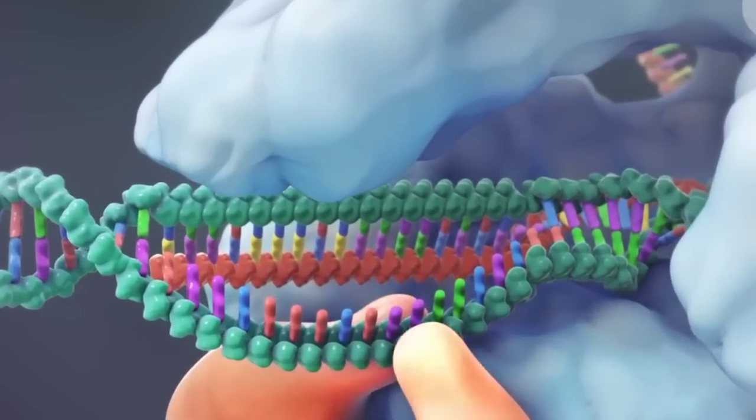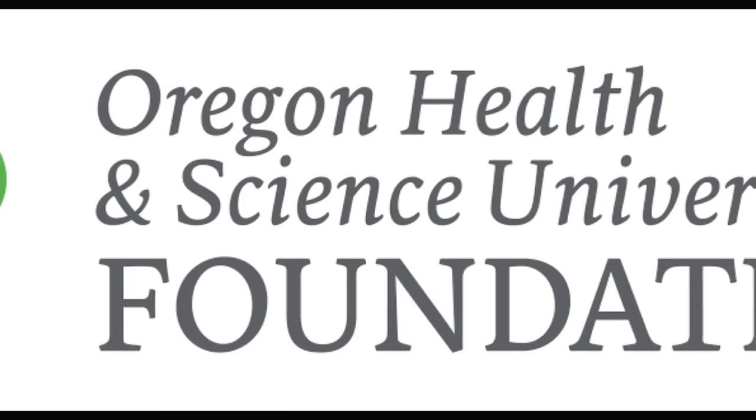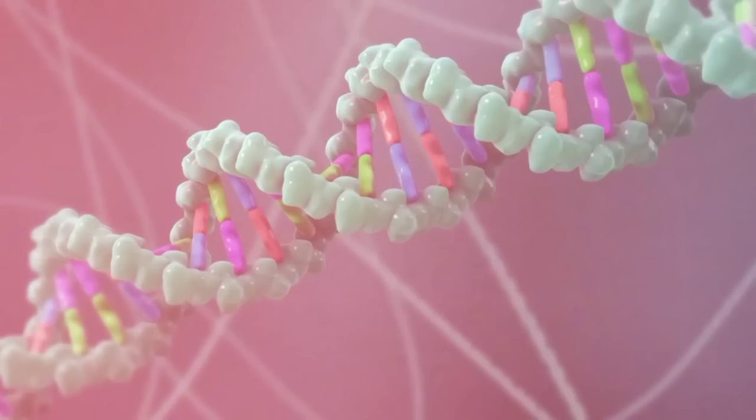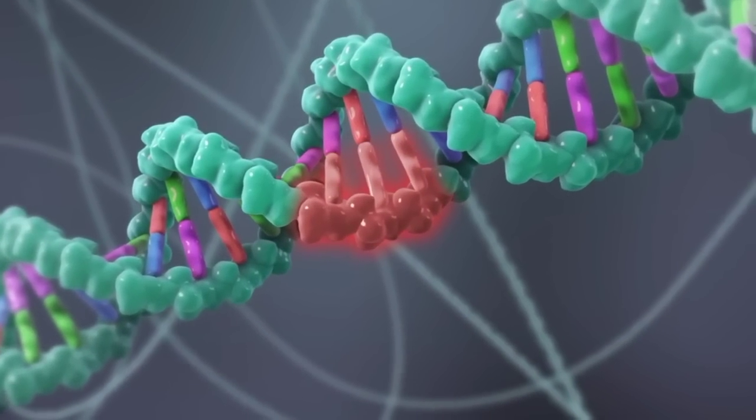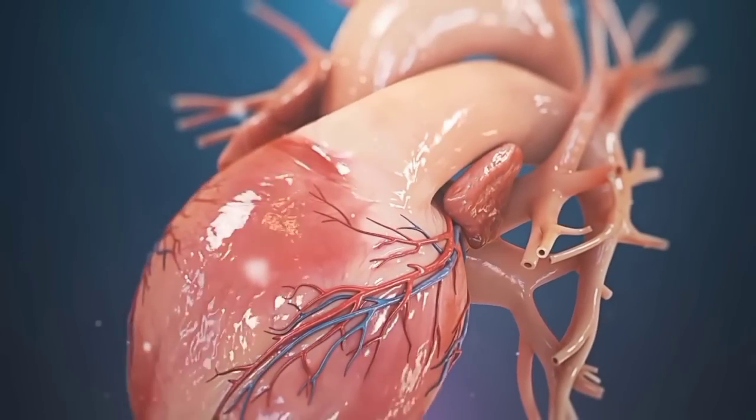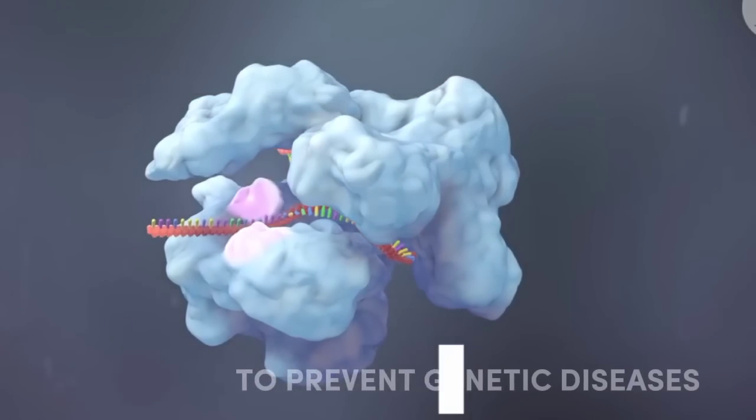A real-life example: Let's look at the successful experiment conducted by the Oregon Health and Science University in 2017. Researchers used CRISPR to correct a genetic mutation in human embryos that causes hypertrophic cardiomyopathy, a common heart disease. This was groundbreaking, demonstrating that it could potentially be used to prevent genetic diseases.